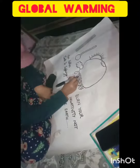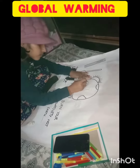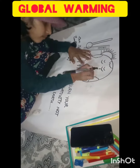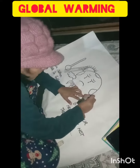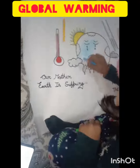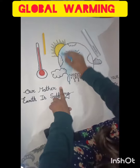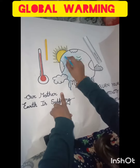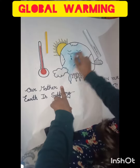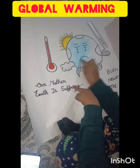Earth is constantly bombarded with an enormous amount of radiation from the sun, which we receive in the form of light and heat energy. These radiations in the form of visible, ultraviolet, and infrared have to first pass through the Earth's atmosphere before reaching the surface. The ozone layer, which is present in the Earth's atmosphere, blocks some amount of harmful ultraviolet rays from reaching the surface.